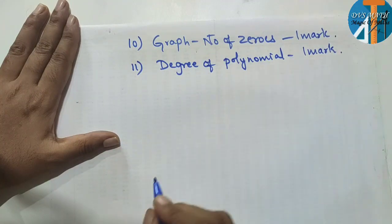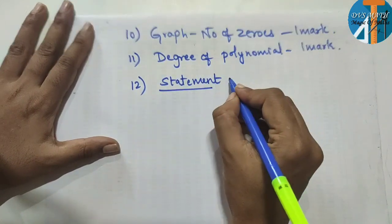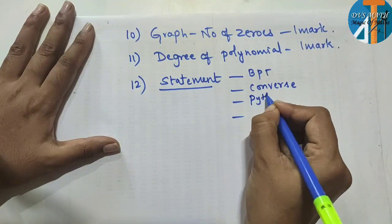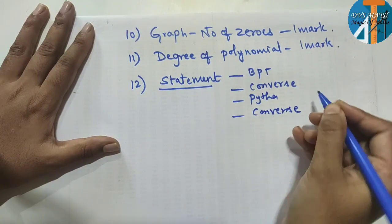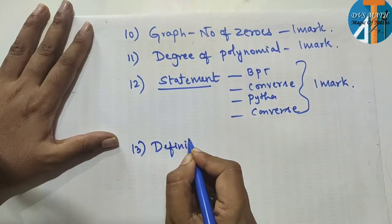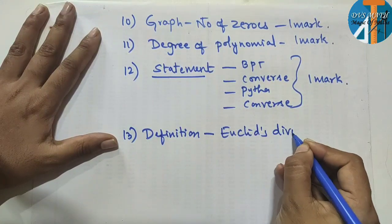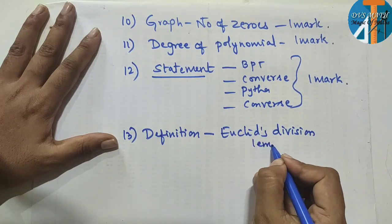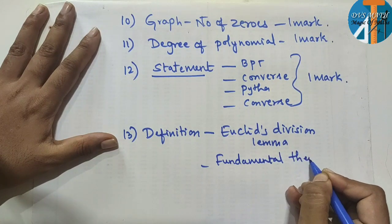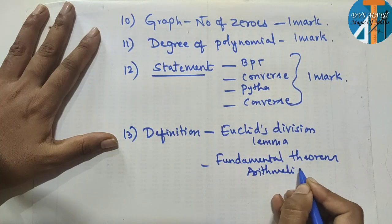There are four types of statements to consider: BPT or its converse, and Pythagoras or its converse. These statements are easy — here you can get one mark. Definitions will also come: one is Euclid's division lemma definition, and another is the fundamental theorem of arithmetic. These real number definitions give one mark easily.